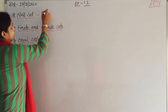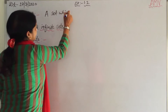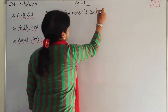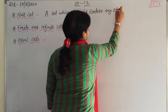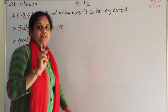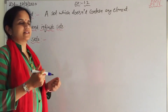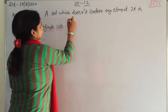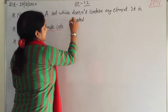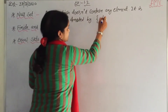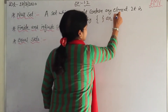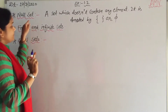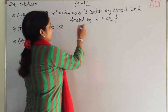First, null set. A set which does not contain any element. If there is no element in a set, then it is a null set. It is denoted by either empty curly brackets or the symbol Ø. Null set is also known as empty set and void set.